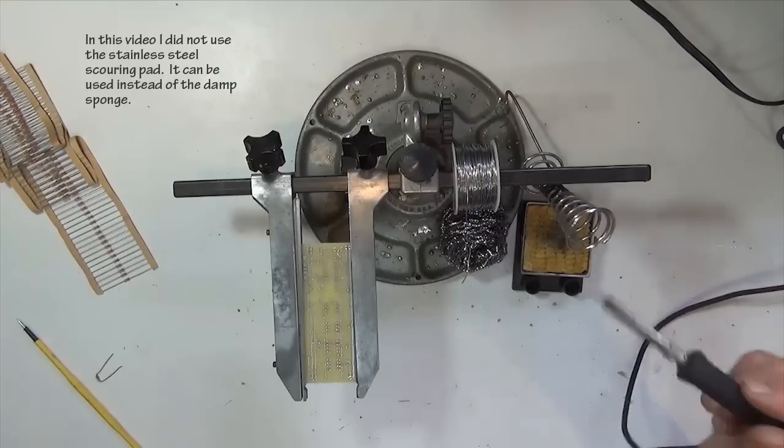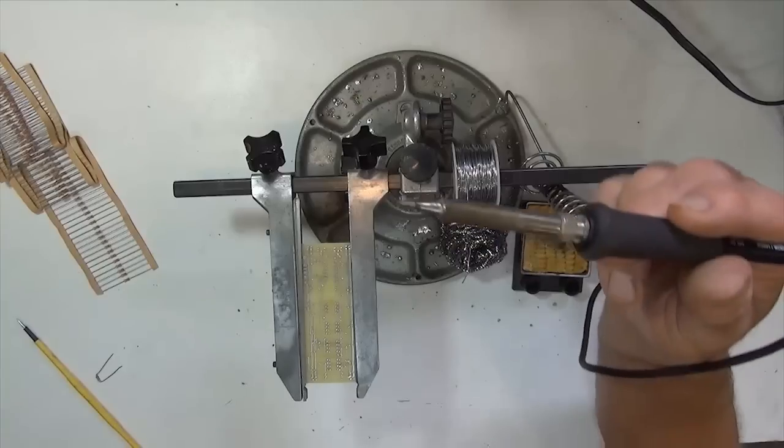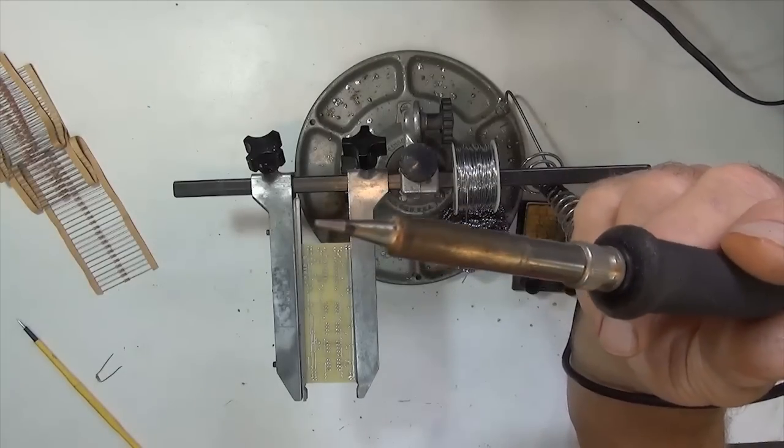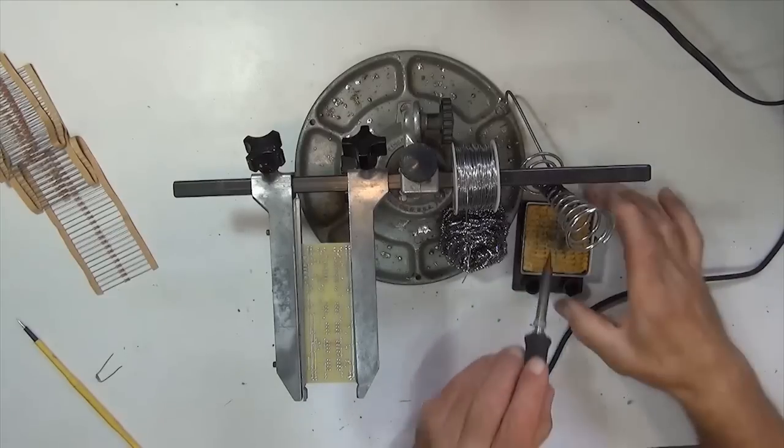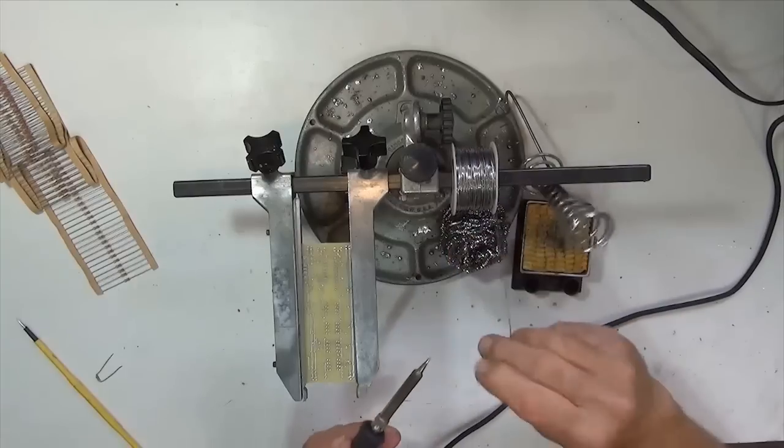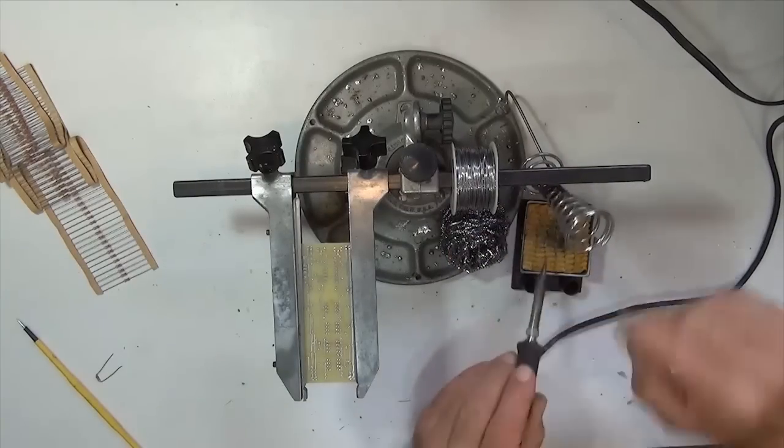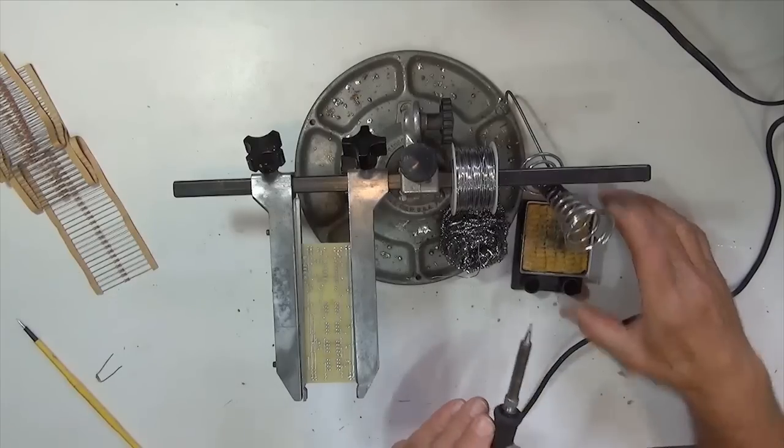So to start off with, we're going to look at the soldering iron tip. You can see here it's nice and clean. It's well tinned. So what we can do is give it a wipe off. Give it a little bit of solder and give it a wipe again. So it's nice and clean.